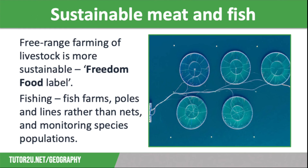Sustainable fishing also considers the methods used to catch fish. Using a pole and line or diving for shellfish is much more sustainable than using large nets, as other species such as dolphins and turtles can get caught in them and are then returned dead to the sea. It's also more sustainable than dredging the seabed or bottom trawling, which causes widespread damage to the seabed ecosystem.